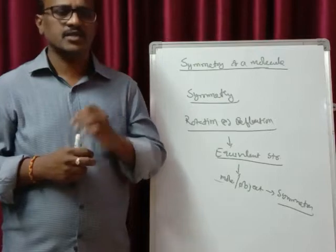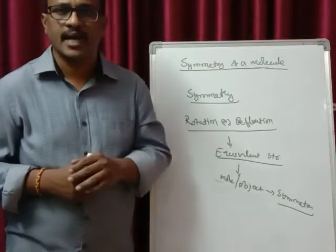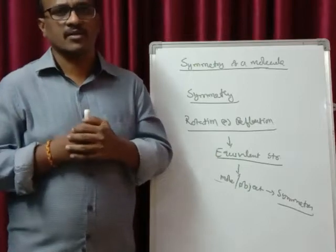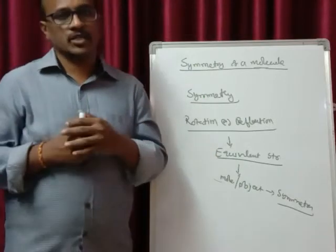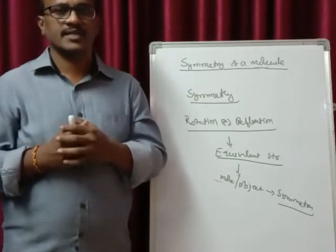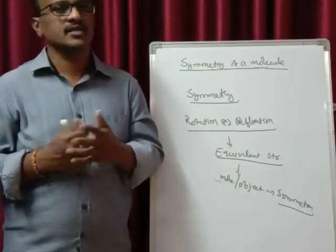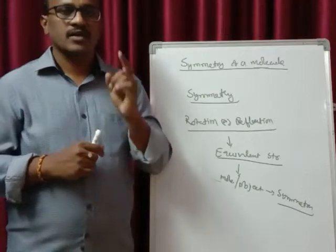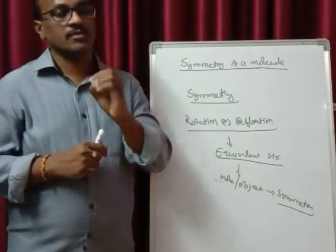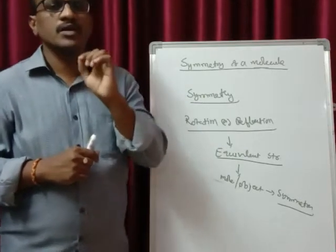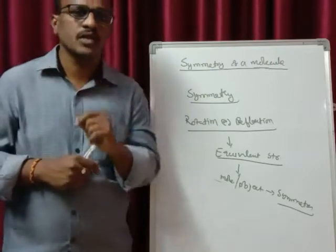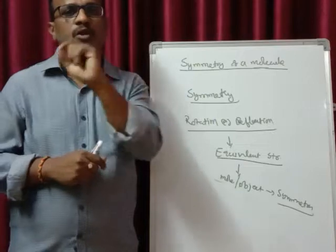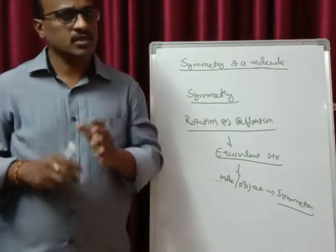The centre of gravity should not change along the axis you are selecting. If you are selecting the x-axis, the rotation or reflection should be done along that axis. If you are selecting the y-axis, the rotation or reflection should be done along that particular axis. If you change the axis — say rotating along the y-axis when you selected x — it does not give you the equivalent structure. Whenever you do the rotation or reflection, the centre of gravity of the molecule should remain constant. This is an important point.